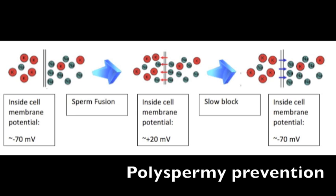The fast block is only present in species where huge amounts of sperm might encounter the egg, like a sea urchin, so it is more important to provide a quick response block than in mammals, where fewer gametes are present during reproduction.